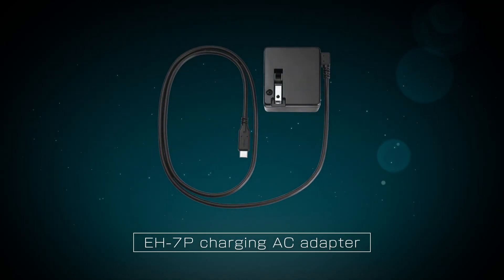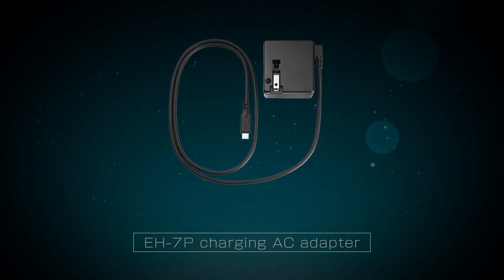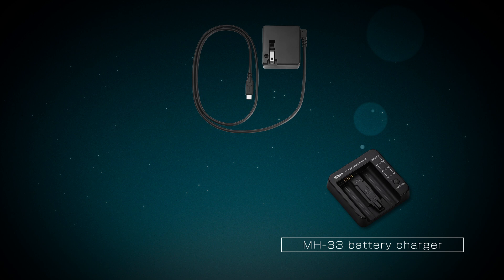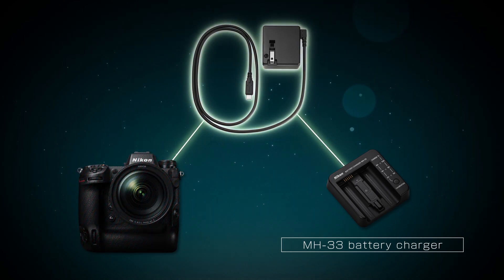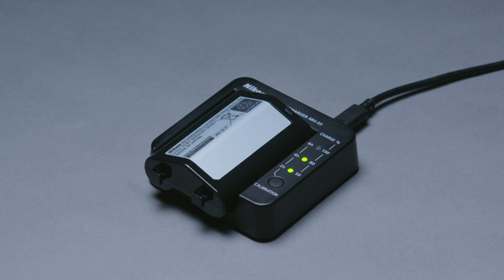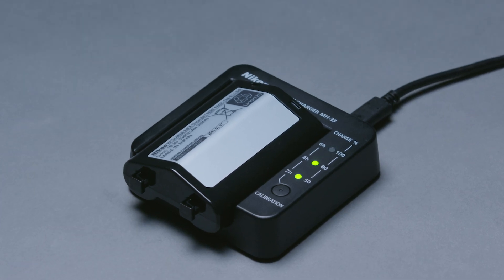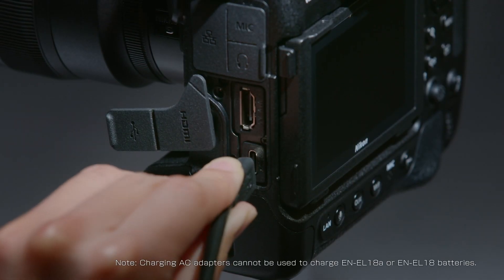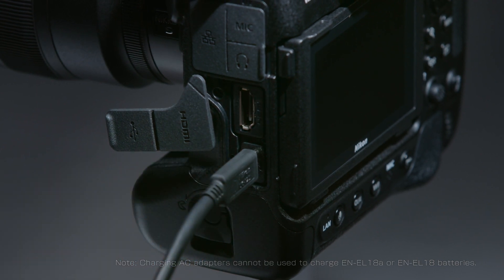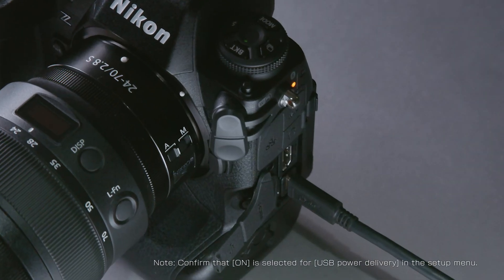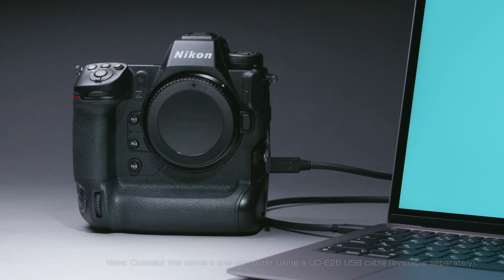The supplied EH7P charging AC adapter can be connected to the camera or to an MH33 battery charger. Connect it to an MH33 battery charger to charge the battery directly, or to the camera USB port to either supply power or charge the battery inserted in the camera. It supplies power when the camera is on and charges the battery when the camera is off. Computers with a Type-C USB connector can also be connected to supply power or charge the battery.